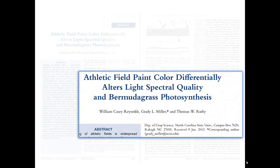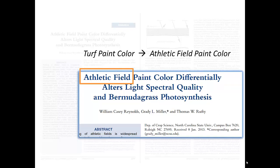For this paper, the title is Athletic Field Paint Color Differentially Alters Light Spectral Quality and Bermudagrass Photosynthesis. The authors are William Casey Reynolds, Grady Miller, and Thomas Ruffke of the Department of Crop Science, North Carolina State University. The order of authors is related to their relative effort or contribution to the study. The author with the most contribution, its analysis, and the writing of the article is listed first. Note the keywords that the authors have used to describe their study. Although in my keyword search, I use the word turf, perhaps I should use the term athletic field in future searches. That might uncover additional articles that may be of relevance to my topic.